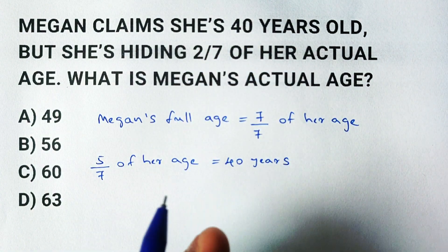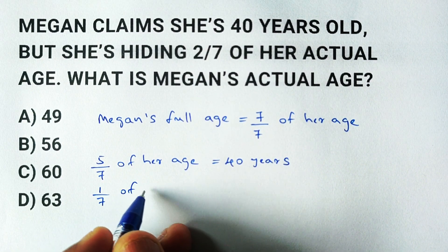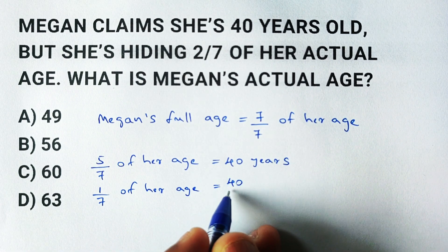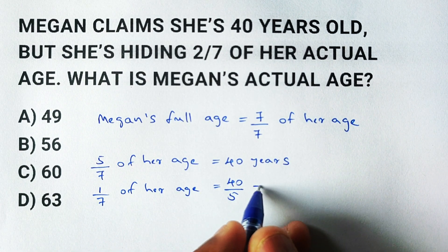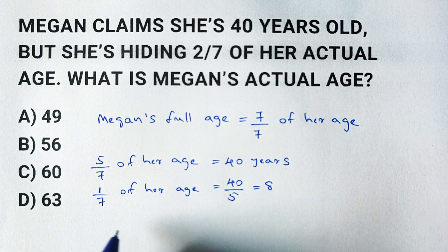Now that we know five sevenths of Megan's age equals 40 years, we can figure out what one seventh of her age would be. To do this, we divide 40 by 5, which gives us 8. So one seventh of Megan's age is 8 years.